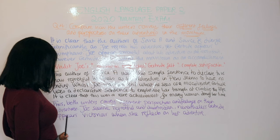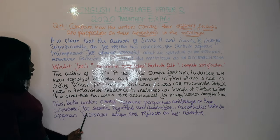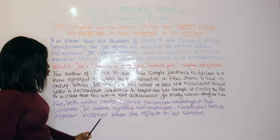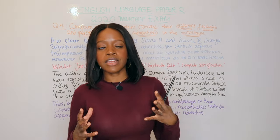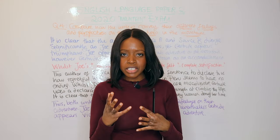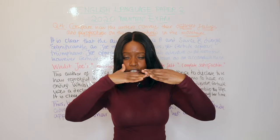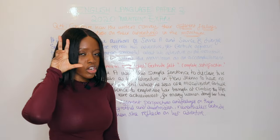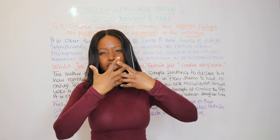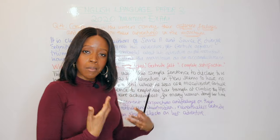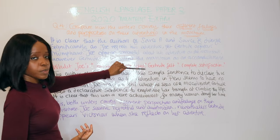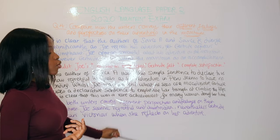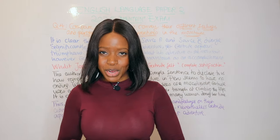To end the PEEL paragraph, the Link ties back to the question's keywords: 'Thus, both writers convey different perspectives and feelings on their adventures. Joe seems regretful and downtrodden, whilst Gertrude appears victorious when she reflects on her adventures.' In question four, you must always enmesh both sources within the same paragraph — don't write one paragraph about source A and then another about source B. Use PEEL: compare source A and B in your Point, Evidence, Explanation, and Link. That's really it for answering question four of Language Paper 2.